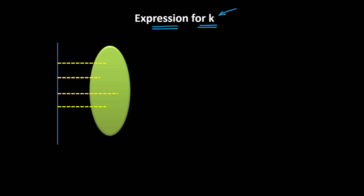Radius of gyration is denoted by K and it has the same units as that of length, so the SI unit would be meters — it could also be represented in centimeters. Let us assume AB is our axis of rotation and this entire system is rotating in this direction.